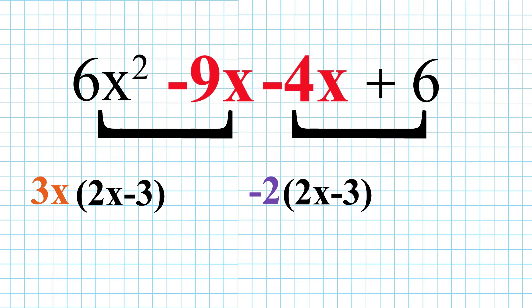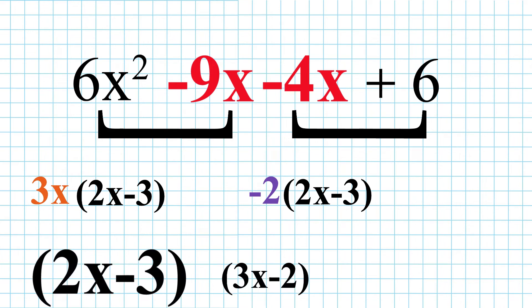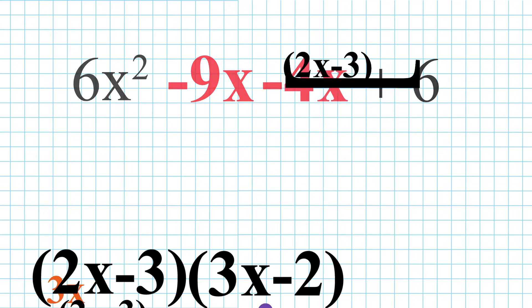Items of both the brackets are seen. So, we will write them once and the remaining factor in a new bracket. So, our final answer would look like 2x minus 3, 3x minus 2.